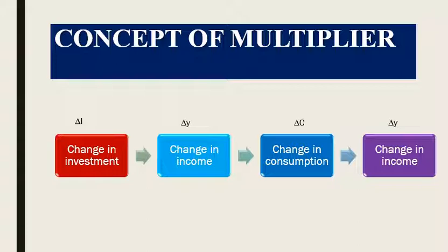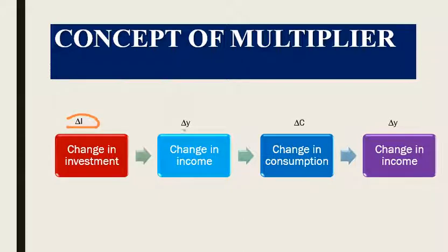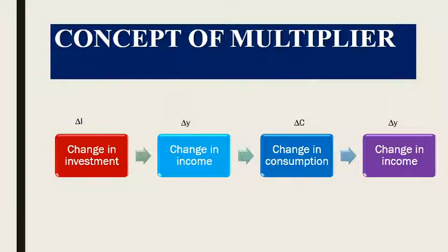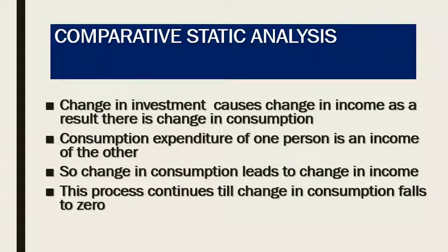In the working of comparative static analysis, there is a change in investment denoted by delta I. When there is a change in investment, there is a change in income. Since income equals consumption plus investment, an increase in income leads to a change in consumption. The consumption expenditure of one person becomes the income of another. This change in consumption due to change in income continues until the change in consumption falls to zero.